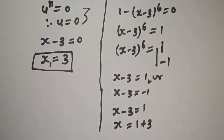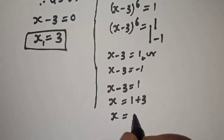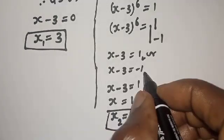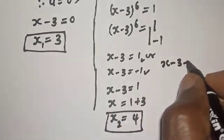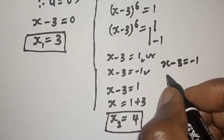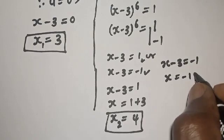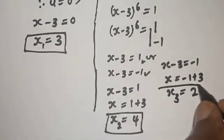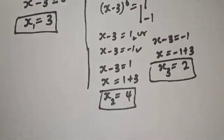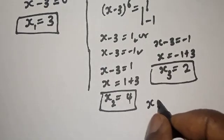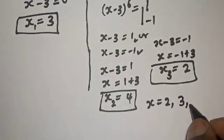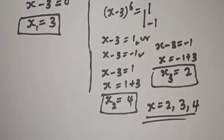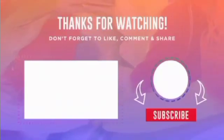From x minus 3 equals 1, we get x equals 4 — let's call this s2. From x minus 3 equals negative 1, x equals 2 — let's call this s3. Also, x minus 3 equals 0 gives x equals 3. Therefore our final answers are x equals 2, 3, and 4. If you enjoyed the class, please don't forget to like, share, comment and subscribe. Thank you.